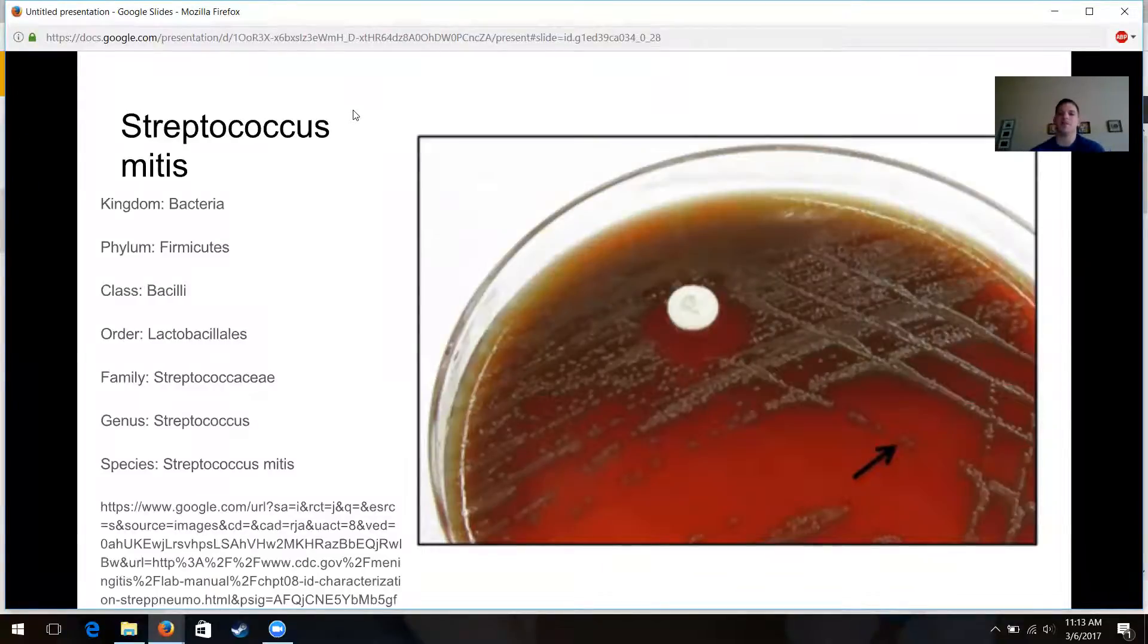All right, as far as the Linnaean taxonomy, the kingdom is bacteria, of course, the phylum is firmicutes. The class is bacilli because that's one of the defining characteristics of this particular organism. They do have bacilli that vary in shape and length from individual to individual within the species. So there's just a lot of variation.